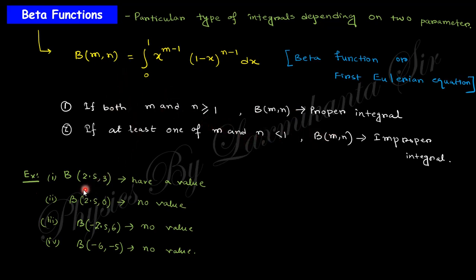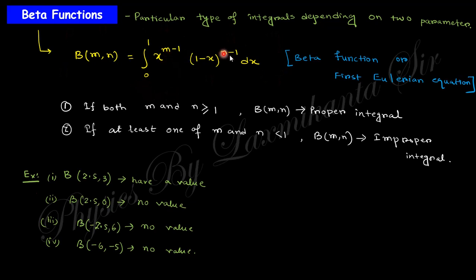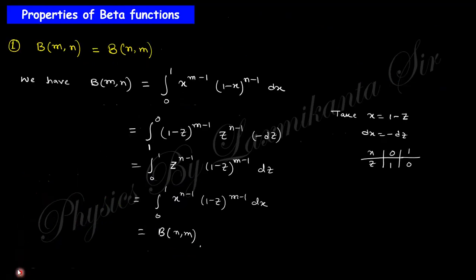When m and n are both greater than 1 we get a proper integral and can evaluate the beta function. But if either m or n is less than 1, we cannot get a finite value. So you need to remember: the beta function requires the condition m, n ≥ 1. Now let's discuss some properties of the beta function that will be helpful for calculations.